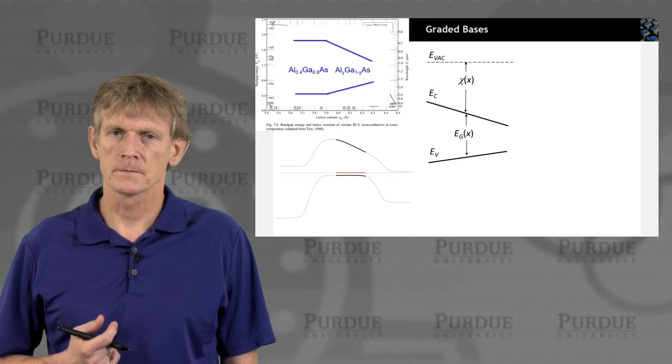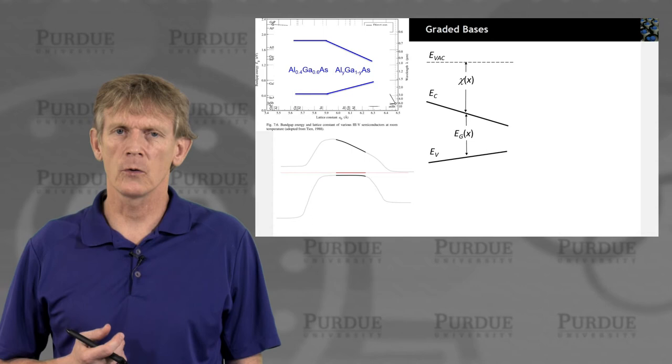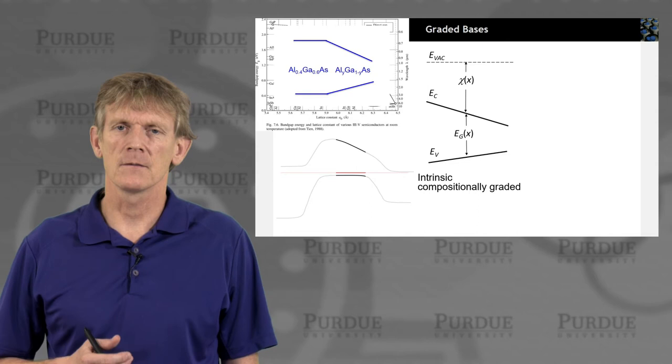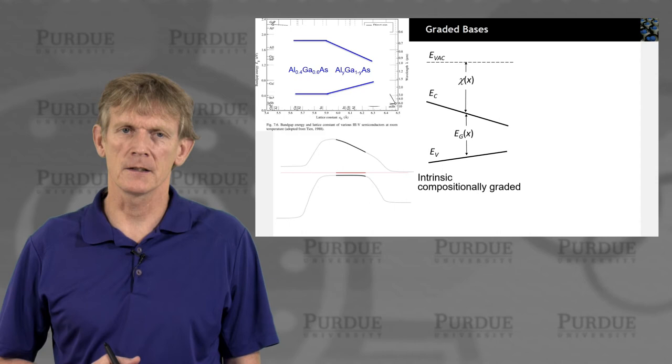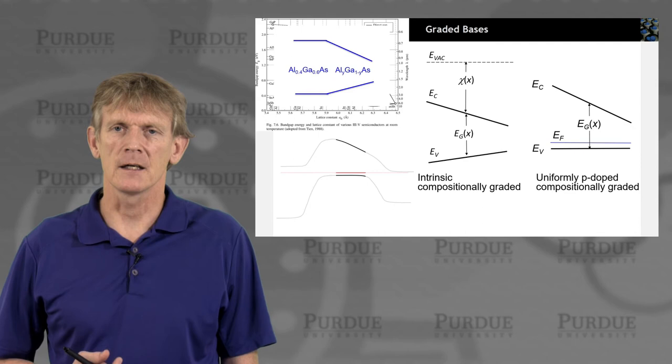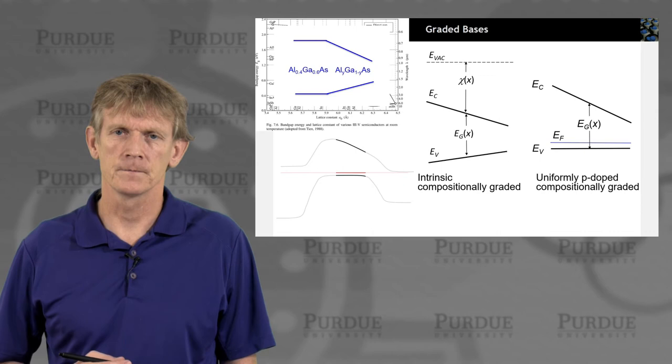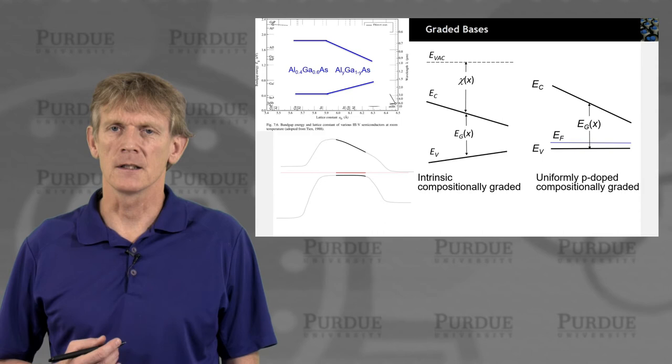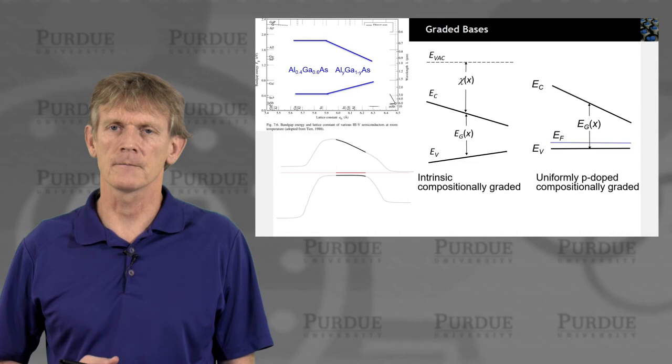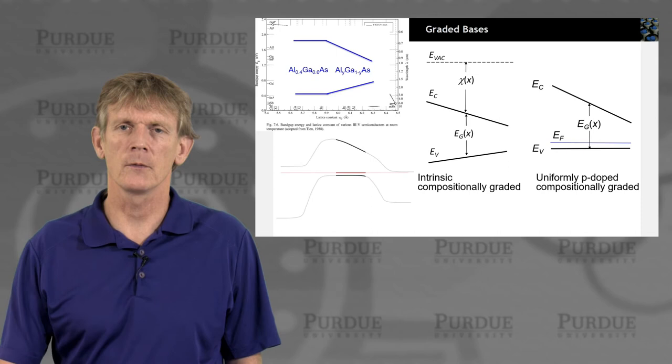Now this is not quite the slope we wanted to achieve. What we did here is, what I've shown you here is the intrinsic compositionally graded material. Now if we dope this to be p-type, then we peg the valence band to the Fermi level. So all the electrostatics will adjust themselves to keep the Fermi level close to the valence band, if we do a uniform p-type doping. And that is how we build in a ramp, like this, shown on the bottom left here.